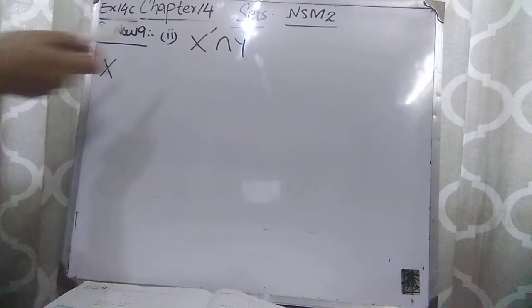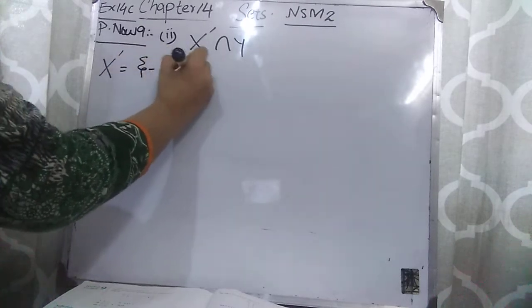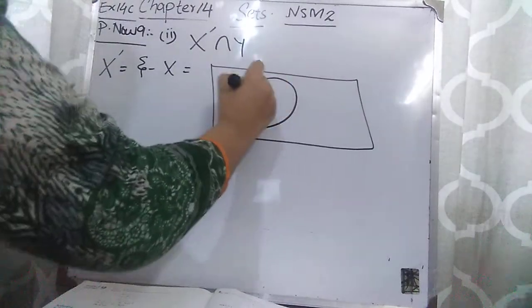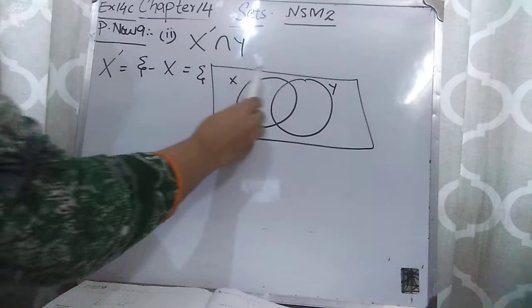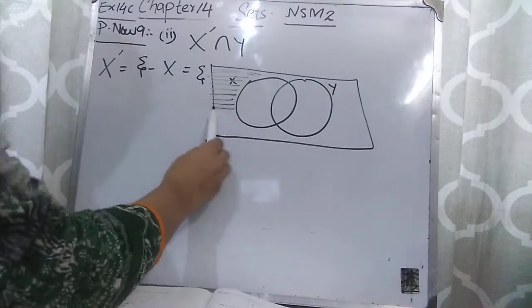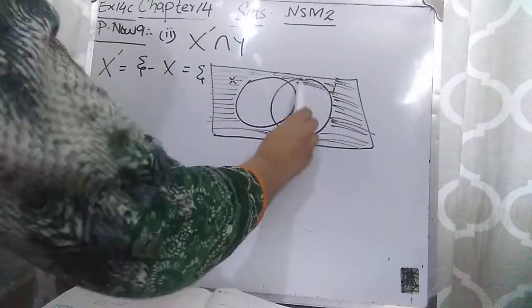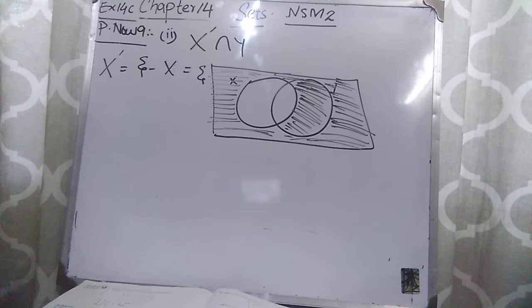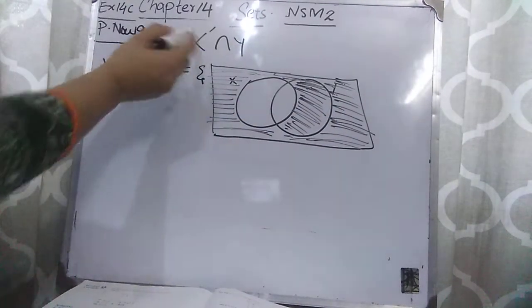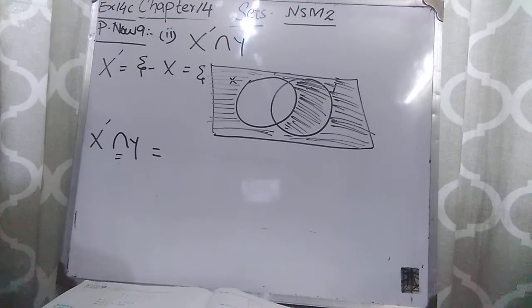The second part is X complement intersection Y. In the first step we find X complement — subtract X from the universal set. Here is the Venn diagram with two sets X and Y and the universal set. When you subtract X, just this area is left, so you shade that area. Intersection means common, so you have to find the common area between X complement and Y.